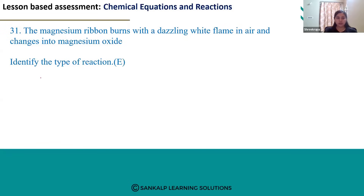Let's see the chemical equation. Magnesium ribbon reacts with oxygen present in the air to form magnesium oxide. You can see two reactants are getting combined to produce a product.